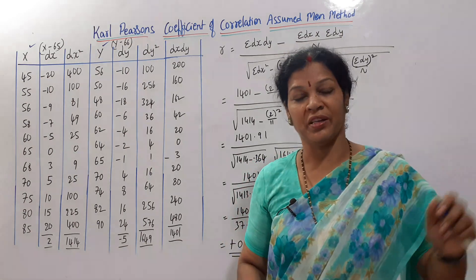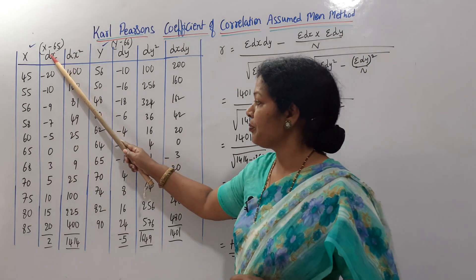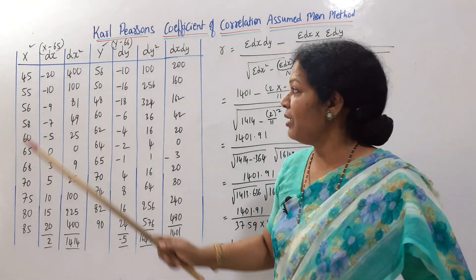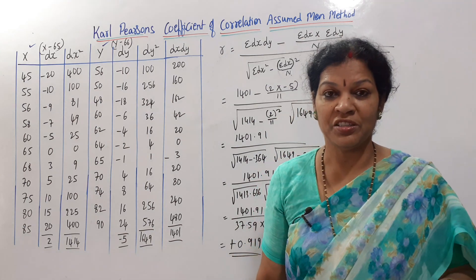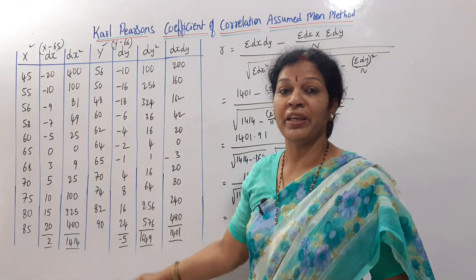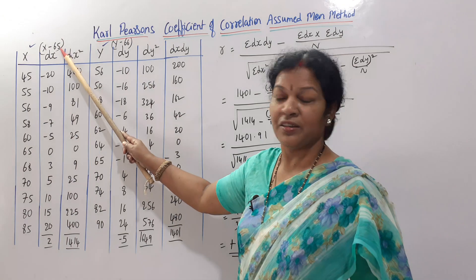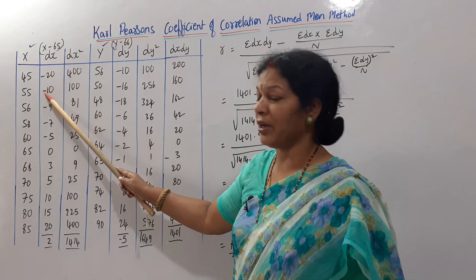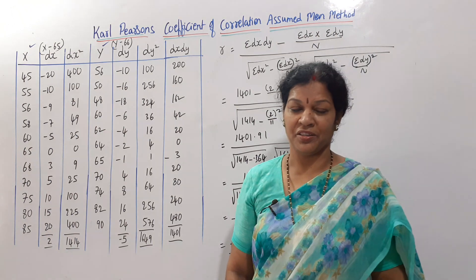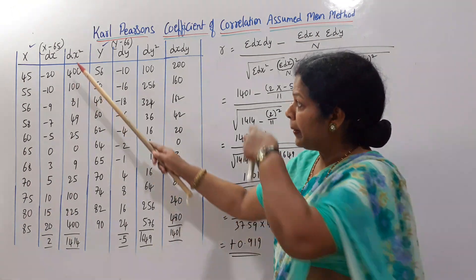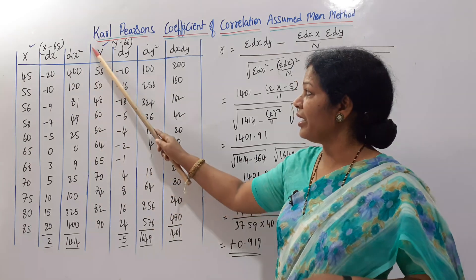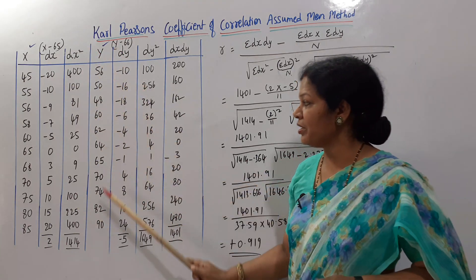For dx, we subtract the assumed mean from x. I have assumed 65 as the assumed mean — you can take any number. For example: 45 minus 65 gives minus 20, 55 minus 65 gives minus 10, 56 minus 65 gives minus 9, and so on. Then dx-squared: minus 20 times minus 20 equals 400, minus 10 times minus 10 equals 100, and so on.